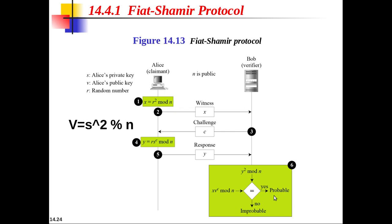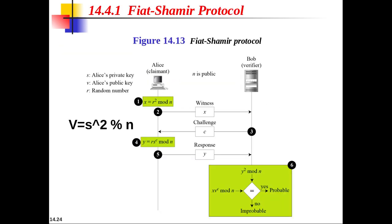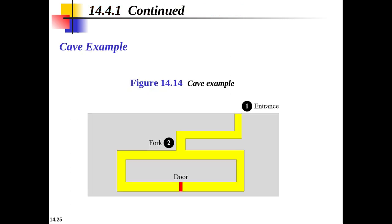These six steps constitute a round. The verification is repeated several times with the value of challenge c equal to 0 or 1, chosen randomly. The claimant must pass the test in each round to be verified. If she fails even a single round, the process is aborted and she is not authenticated.